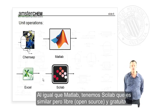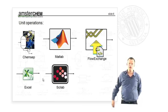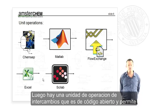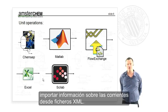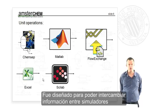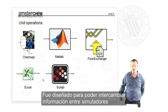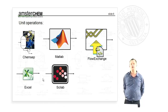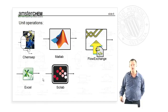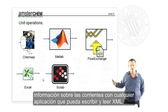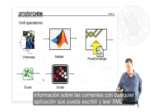Just like MATLAB, we have Scilab, which is similar to MATLAB except Scilab is open source and free of charge. Then there is the FlowExchange unit operation, an open source unit operation that allows you to export stream information to an XML file and import XML back to stream information. It was designed to exchange stream information between simulators, but because it uses XML, it also allows exchange of flow information with any application that can read and write XML.